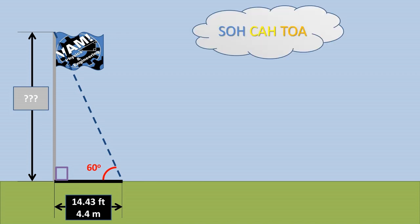To solve this problem, we'll be using SOHCAHTOA, which we can use to solve a right triangle or triangles with one 90-degree angle.